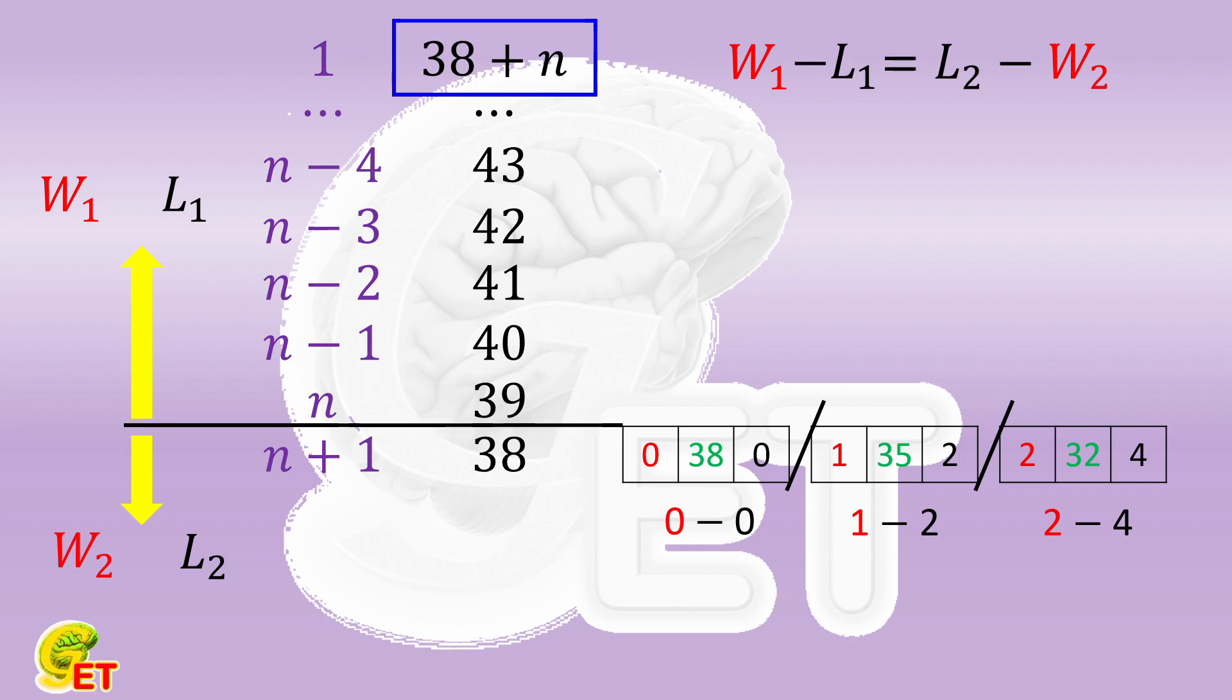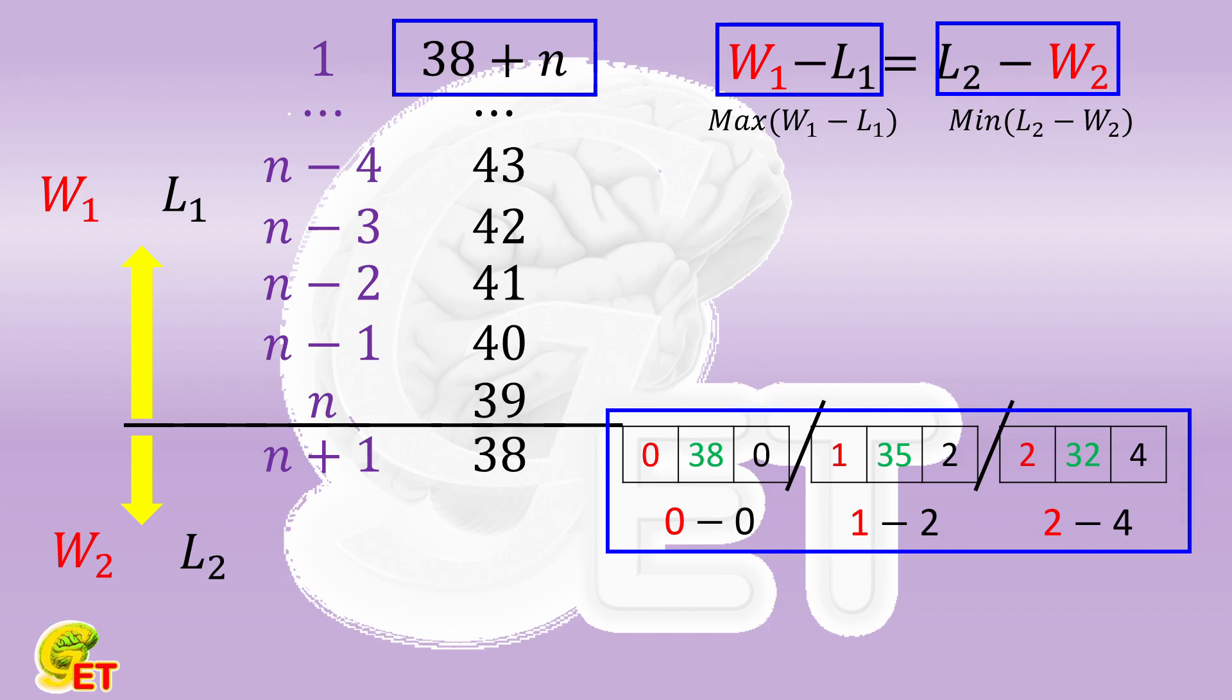Now let's calculate the maximum value of W1 minus L1, and the minimum value of L2 minus W2 respectively. Because the more wins, the fewer the wins minus losses. No matter we calculate the maximum value of W1 minus L1, or the minimum value of L2 minus W2, we all need to expect the amount of wins by any team as few as possible.